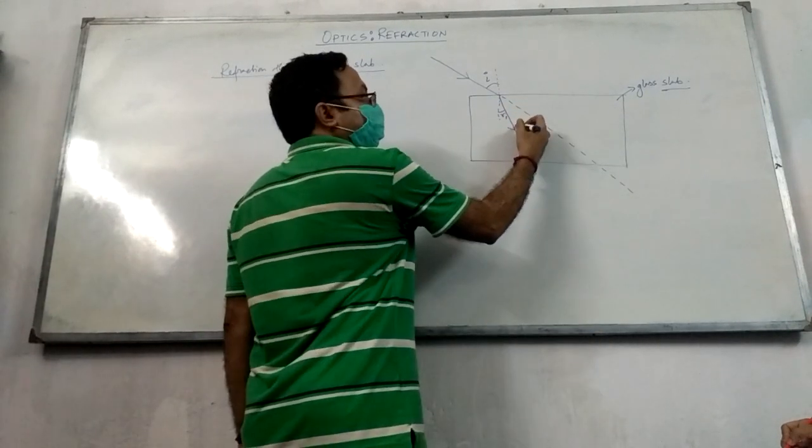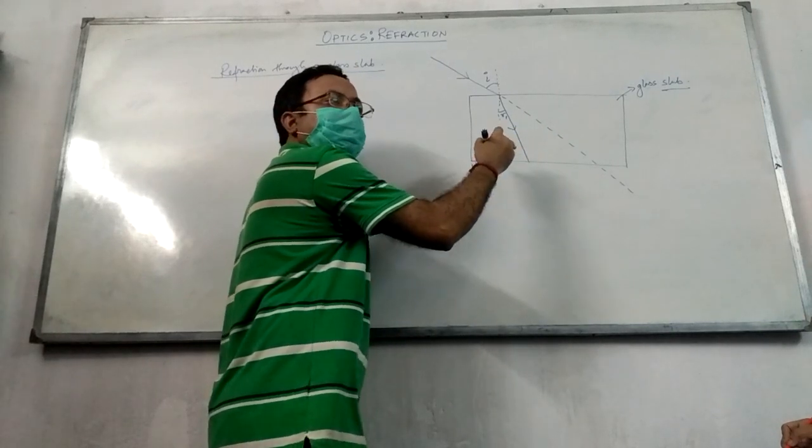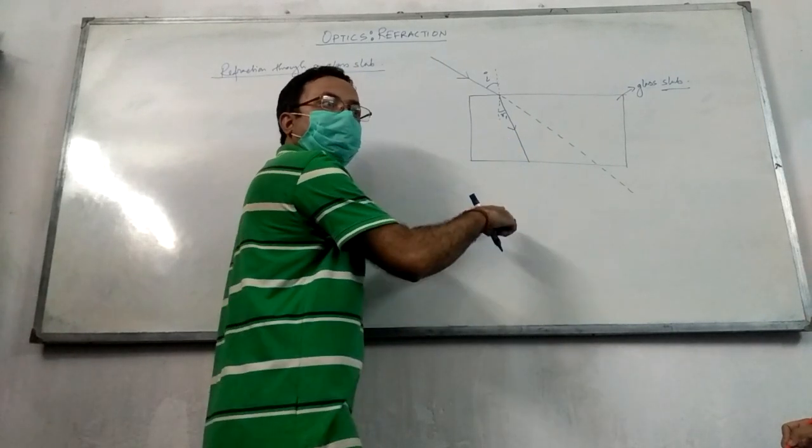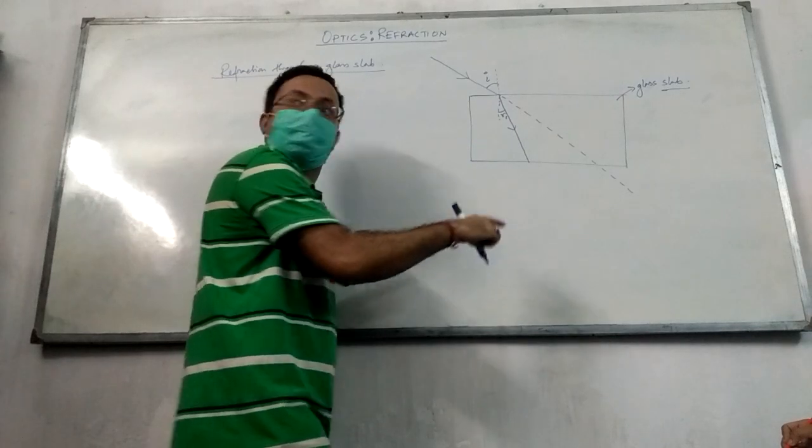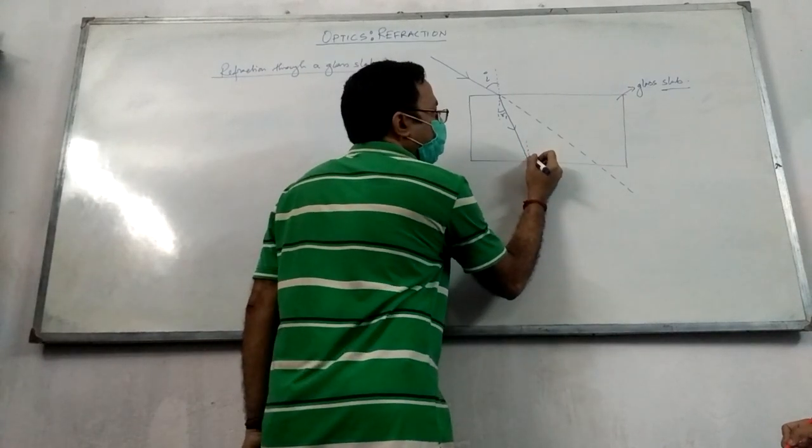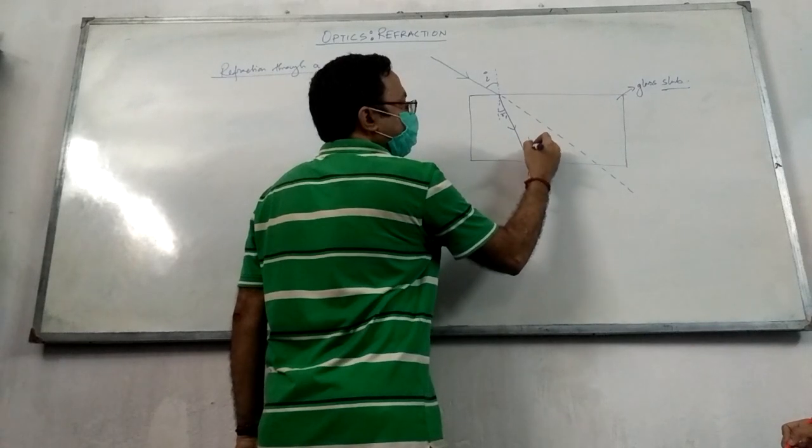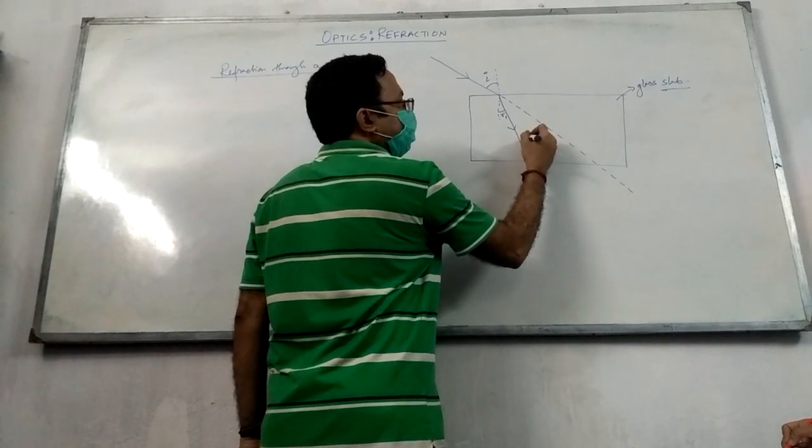How do we go to the next surface? Now where are we from? Denser to rarer. So where are we from? Rarer. So this will be r1. Okay, why do we call it r1?